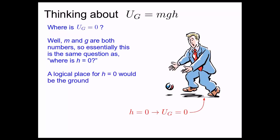Well, a logical place you might think for h to be equal to zero would be the ground. We define the ground to be h equals zero, then the gravitational potential energy on the ground, U_G, is going to be zero when the ball is on the ground.